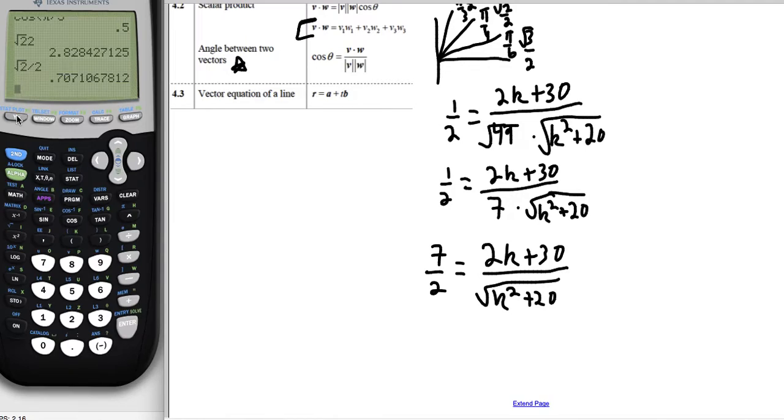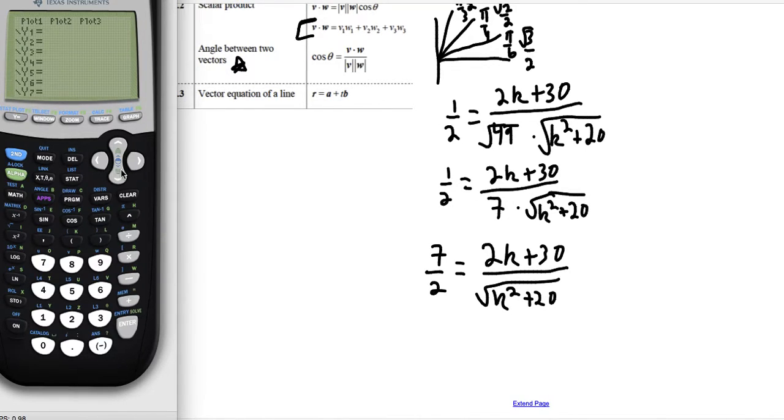So how I like to solve these problems is to go into y equals and put one side of the equation into y1 and the other side into y2 and just see if the lines intersect. So y1, I can say that's 7 halves or 3.5. And y2 is this whole bit. So I'm going to do a parenthesis, a bracket for my numerator. So I'll have 2x plus 30. And I'm going to divide that. And again, I'll use another parenthesis for my denominator set. Make sure I'm dividing by the entire thing. So this is the square root of x squared plus 20. And then close out that bracket.